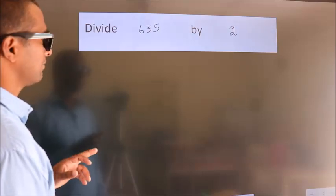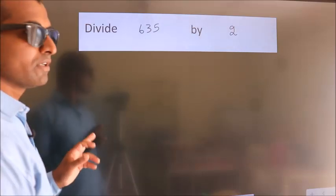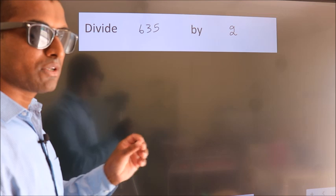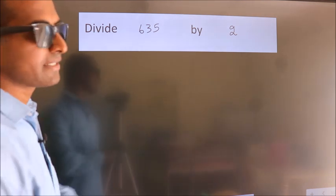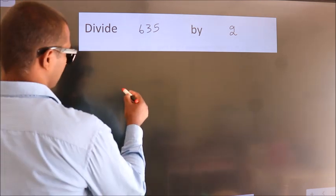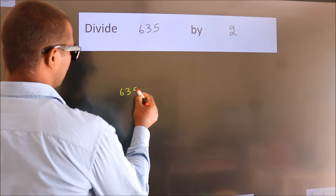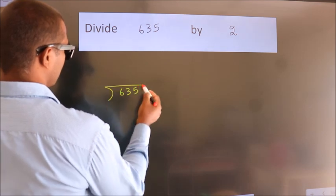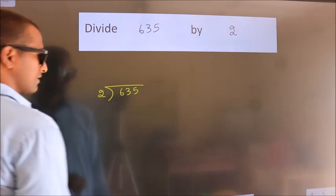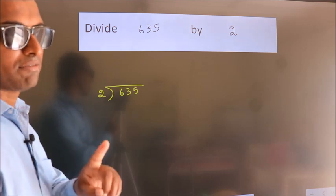Divide 635 by 2. To do this division, we should frame it in this way. 635 here, 2 here. This is your step 1.